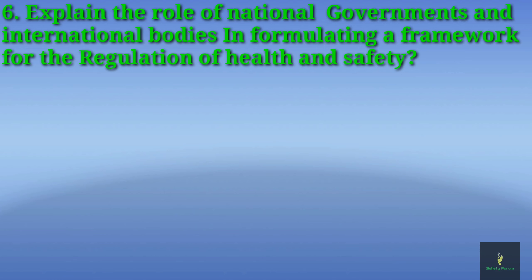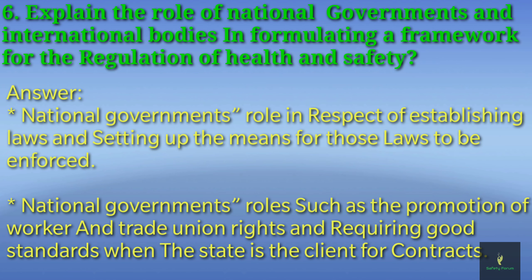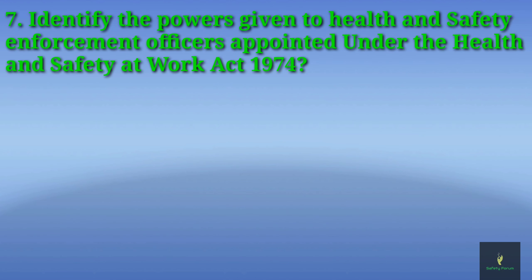The sixth question: explain the role of national governments and international bodies in formulating a framework for the regulation of health and safety. For national governments, you can write about their role in establishing laws and setting up the means for those laws to be enforced, as well as the promotion of worker and trade union rights, and requiring good standards when the state is the client for contracts. You need to elaborate on these two points regarding national governments and international bodies.